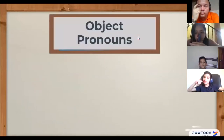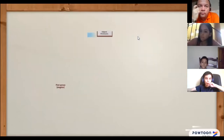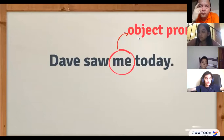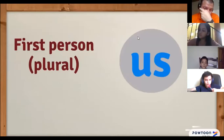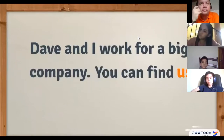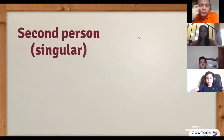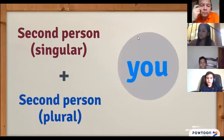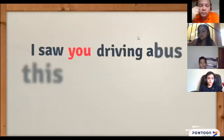So what are the object pronouns in the English language? For the first person singular, the object pronoun is 'me.' For example: 'Dave saw me today.' For the first person plural, the object pronoun is 'us.' For example: 'Dave and I work for a big company. You can find us on the internet.' For the second person singular and plural, we use the object pronoun 'you,' just like the subject pronoun. For example: 'I saw you driving a bus this morning.'